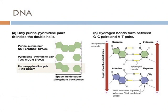Why do pyrimidines and purines always combine together in nucleic acids? The purines can't pair with other purines because there simply isn't enough space. Likewise, the pyrimidines can't pair with each other because there isn't enough space. But the purine-pyrimidine combination is just right — just like Goldilocks.